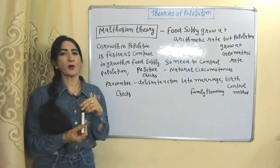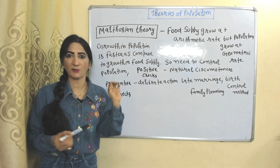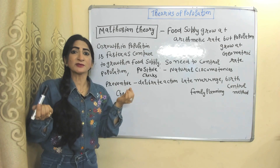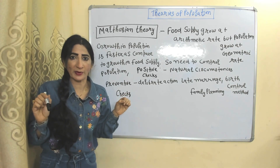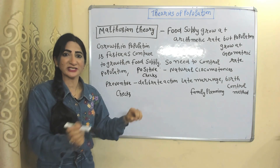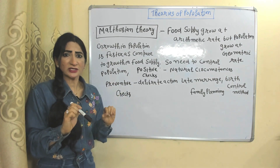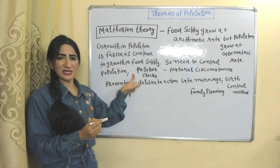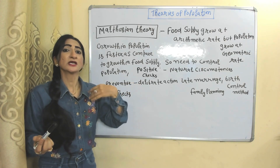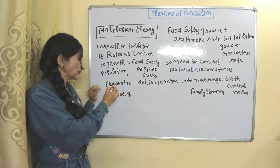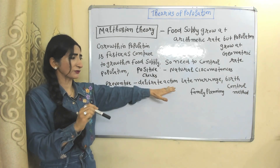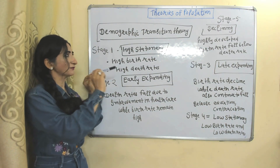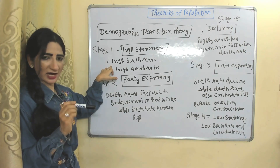Theories of population: the first and most important is the Malthusian theory of population. According to Malthusian theory, food supply grows at an arithmetic rate but population grows at a geometric rate — meaning population grows faster compared to food supply. This is a very complicated situation: our population is growing but we don't have enough food. That's why we need to control population. We can control population by two checks: positive checks — natural circumstances that reduce population like earthquakes and war — and preventive checks — deliberate actions like late marriages, birth control methods, or proper family planning.